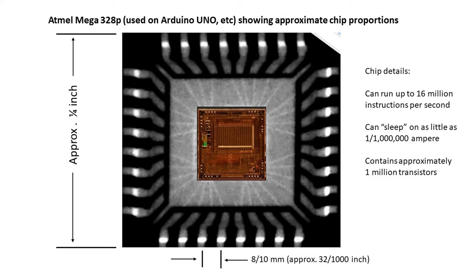This chip can run up to 16 million instructions per second — 8-bit instructions. It can go to sleep, which was hard to do with the 8080, and while sleeping it can take as little as one microamp, so it'll last a long time on a battery. You wake it up by taking a single pin to a logic zero state. This chip contains roughly one million transistors. You can see the chip sitting inside the package — quite impressive in just about 20 years. This is the engine for our Arduino Uno.